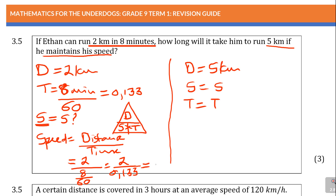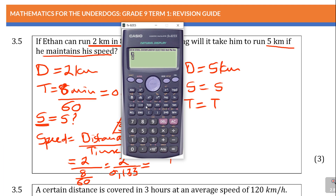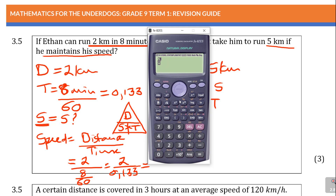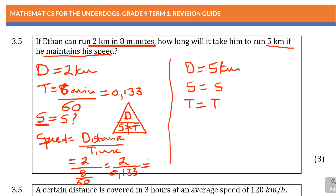If you want the exact answer, use the full fraction: 2 over 8/60, which is 2 divided by 8 over 60, giving you 15. If you used 2 over 0.133, you get 15.037 — not exactly 15. The actual exact answer is 15 kilometers per hour. Don't forget, you're calculating speed: distance is in kilometers, time is in hours, so the unit is kilometers per hour. Units are very important.